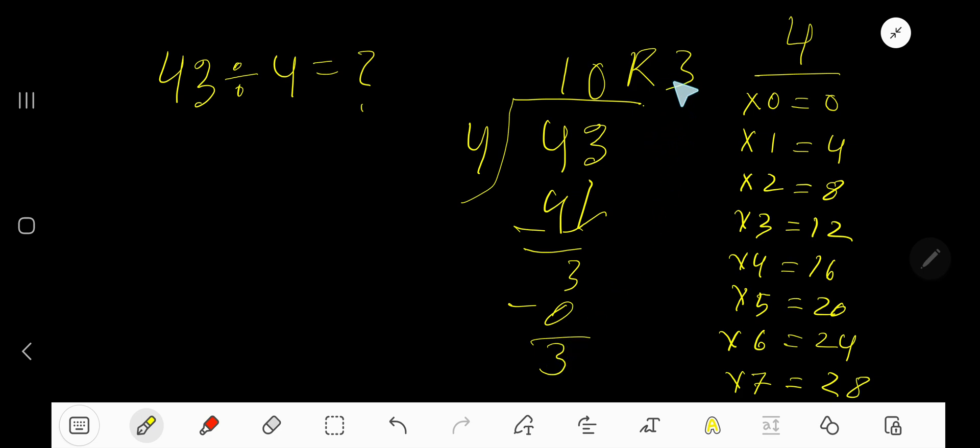If you want to write your answer in decimal form, then take your decimal and add number of zeros. Bring down the first 0. But before this 0, there is a decimal. Decimal must come to the quotient directly.